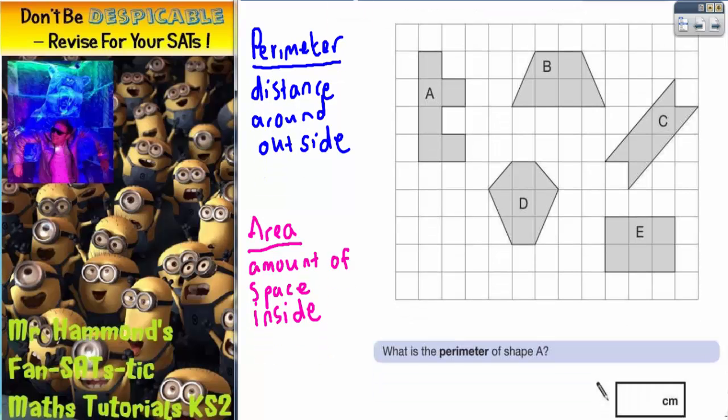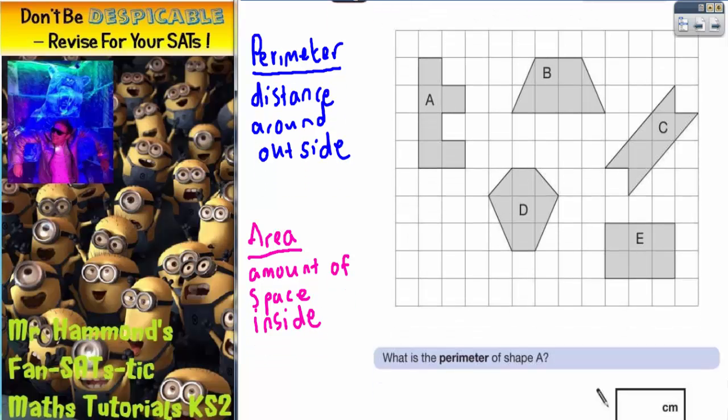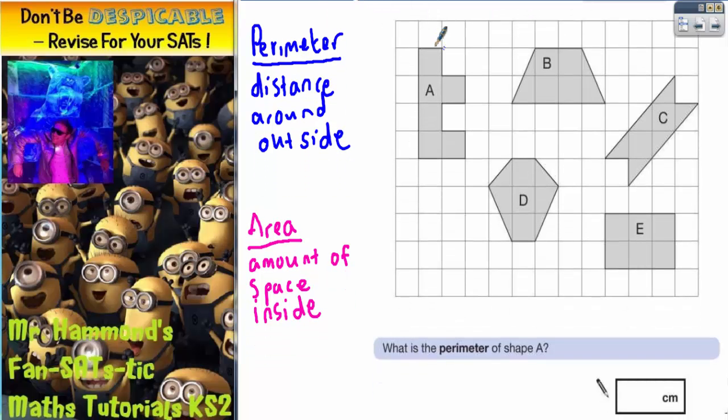So the first part of the question is what is the perimeter of shape A? So all we've got to do is basically start counting around the outside of shape A. So I normally mark each line with a little dash. So if we start at the top here, it doesn't matter where we start.